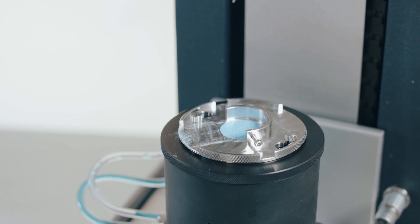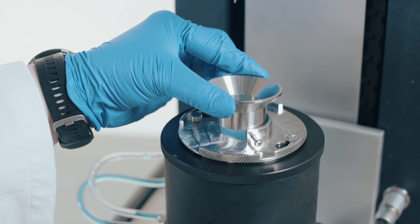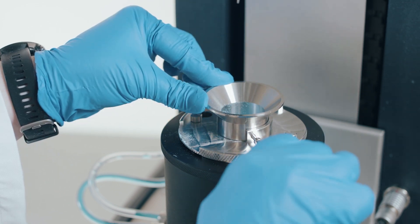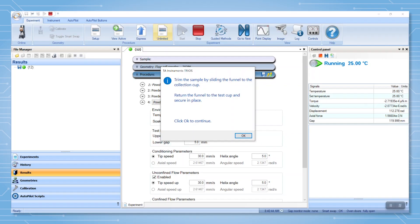After trimming, return the funnel and secure it by tightening the screw. Press OK on the touch screen or in the TRIOS software to move on to the measurement.